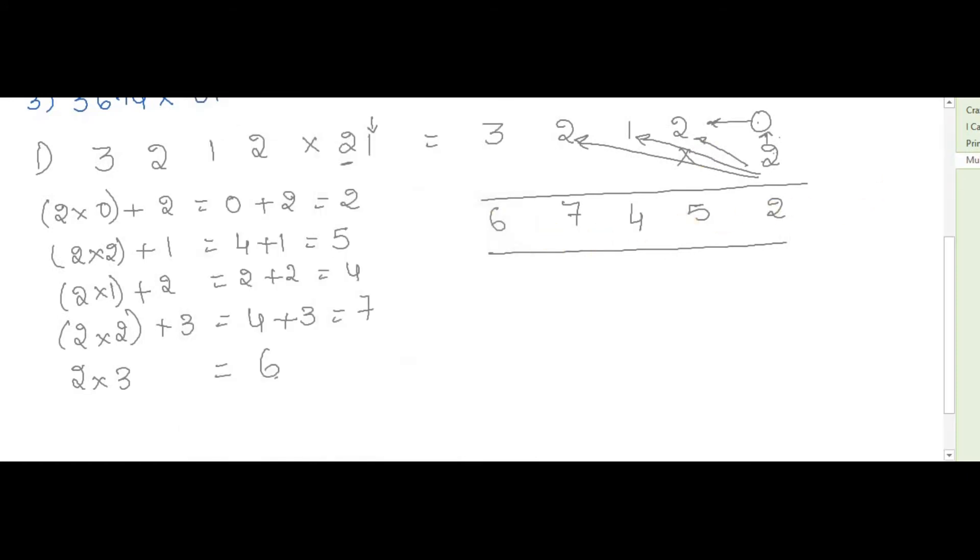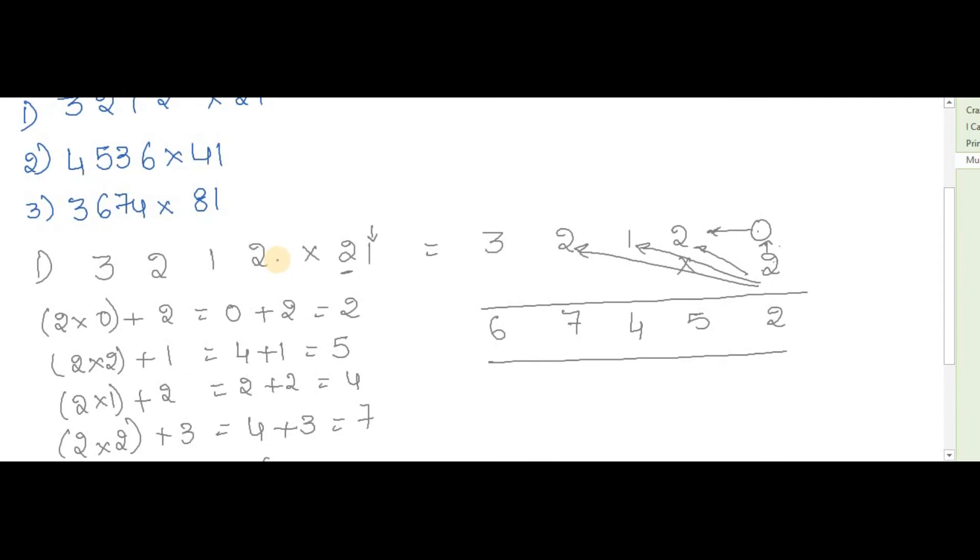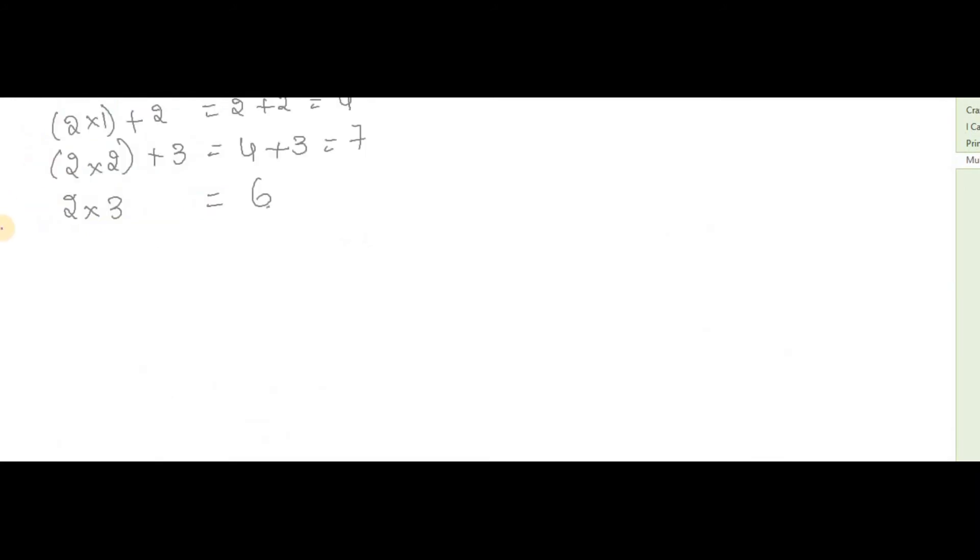Now we'll move on to the next question, that is 4536 multiplied by 41. Of course you all know that first we will add zero in the ones place, and now we will multiply with four. Four zeros are zero plus six.